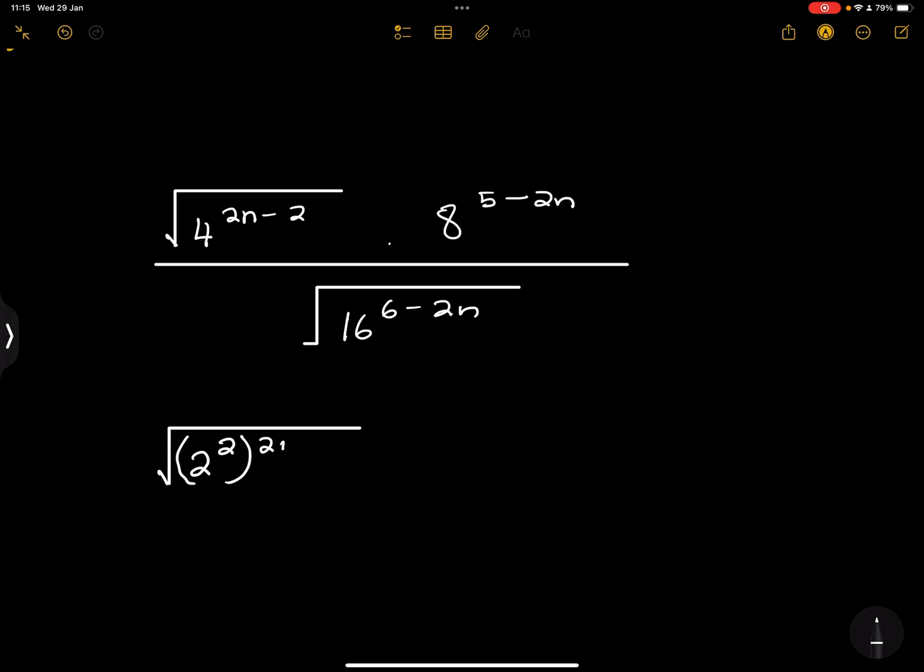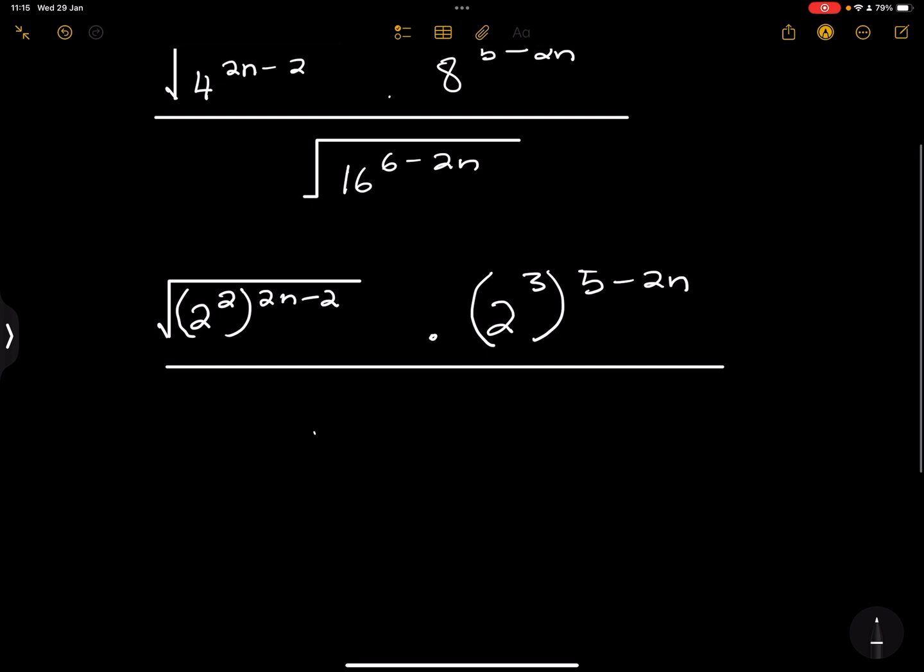So now if it is 2 squared, we're going to raise it to the power 2n minus 2. Nothing changes there. Multiplied by 8, so remember how did we change 8? We said that's 2 to the power of 3, and this is 5 minus 2n, divided by the square root of 16.